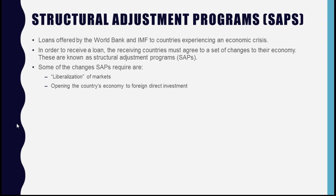Countries also had to open their economies to foreign direct investment, meaning they had to make it easier for foreign companies to set up shop on their land — whether that was a US company setting up manufacturing industries, a McDonald's, or other foreign businesses coming in. Any profit those companies made could be taken out of the country, so wealth was being accumulated on that land, but the people living there weren't receiving it — it was leaving to the US, the UK, or some other higher-power nation.